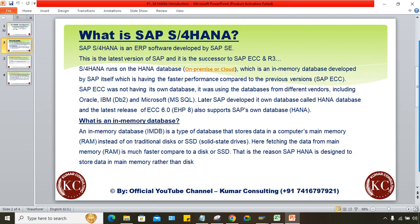After R3, ECC came into the market. ECC 5.0 was there in 2004, and ECC 6.0 came in 2005. From 6.0 onwards, they added Enhancement Packages — EHP 1, EHP 2, EHP 3... EHP 7 in 2013, and EHP 8 in 2014. Then ECC was stopped and they jumped to S4HANA.